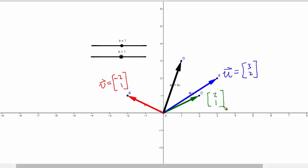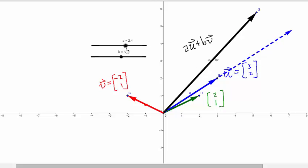And the question is, can we find numbers a and b so that au plus bv is equal to 2, 1? Now, au plus bv, that's this black vector here. And I can adjust a by sliding this slider here. So if I change a, you see au, that's the dotted blue vector there, it's longer.